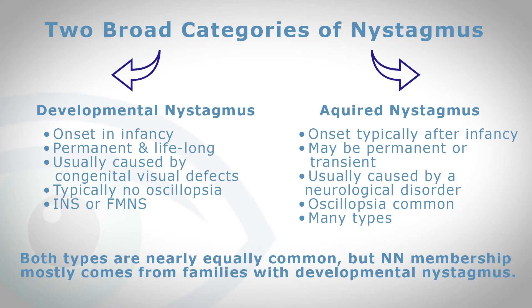Acquired nystagmus has an onset typically after infancy. It may be permanent or it can be transient. It is usually caused by a neurological disorder, and for these people oscillopsia is common but not universal. There are many types of acquired nystagmus.